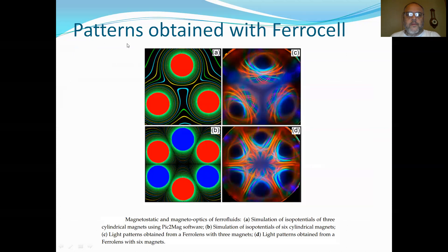Here you can see some patterns obtained with Ferrocell in C and D for different configurations of magnetic fields. Red is South Pole and blue is North Pole. And these are the patterns obtained with the thin film of ferrofluid with illumination of LEDs.